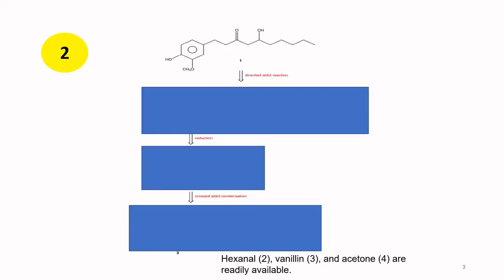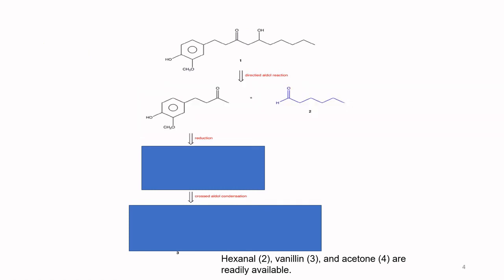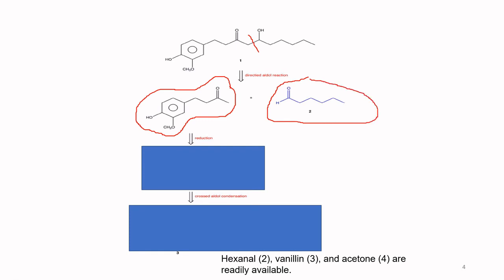The next example is how to produce an aldol compound. When you have an aldol product, you can disconnect it at either of two positions. Looking at one option, if we disconnect at this part we get two synthetic equivalents — two starting materials. One is an aldehyde, which is fine as it is.